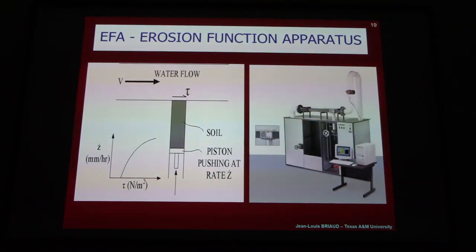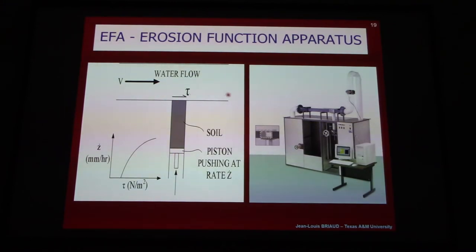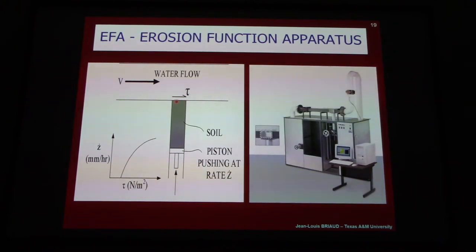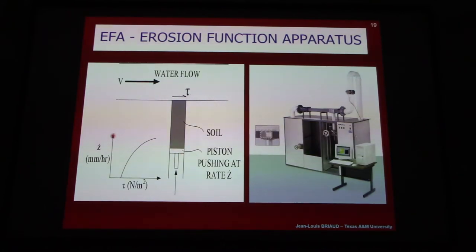We came back to the lab at Texas A&M University where we have a machine. The samples were in tubes. You push the sample out of the tube with a piston, and water is flowing over it through a conduit. You push the soil only as fast as it is eroded by the water flowing over it, so the surface remains at a constant level. From this we measure the velocity and the rate at which we push the piston, which is the erosion rate. For each velocity we get an erosion rate - a point on the plot. We call this the erosion function.